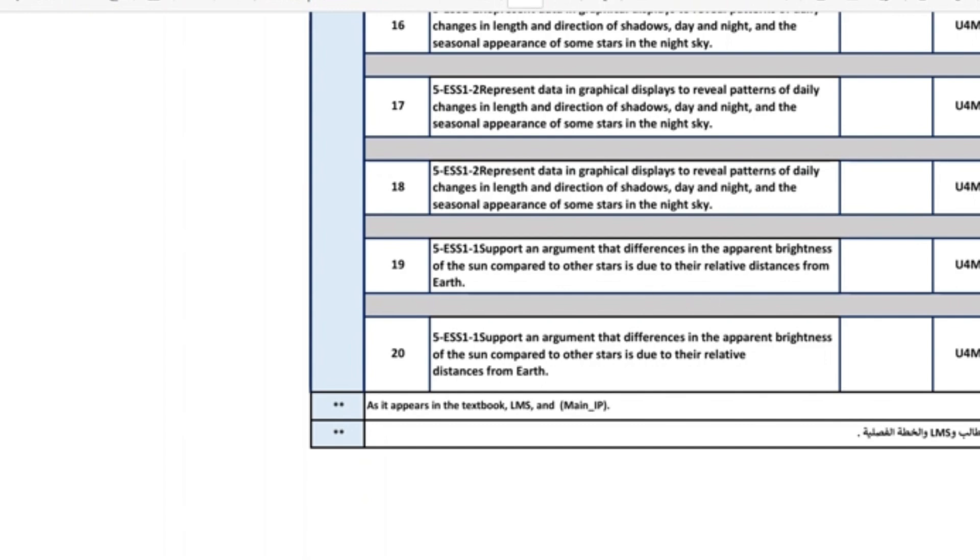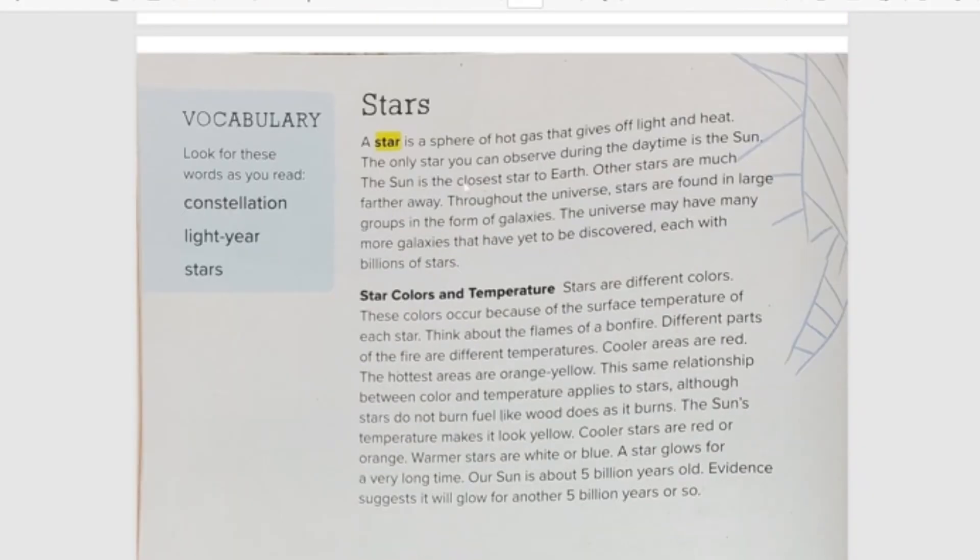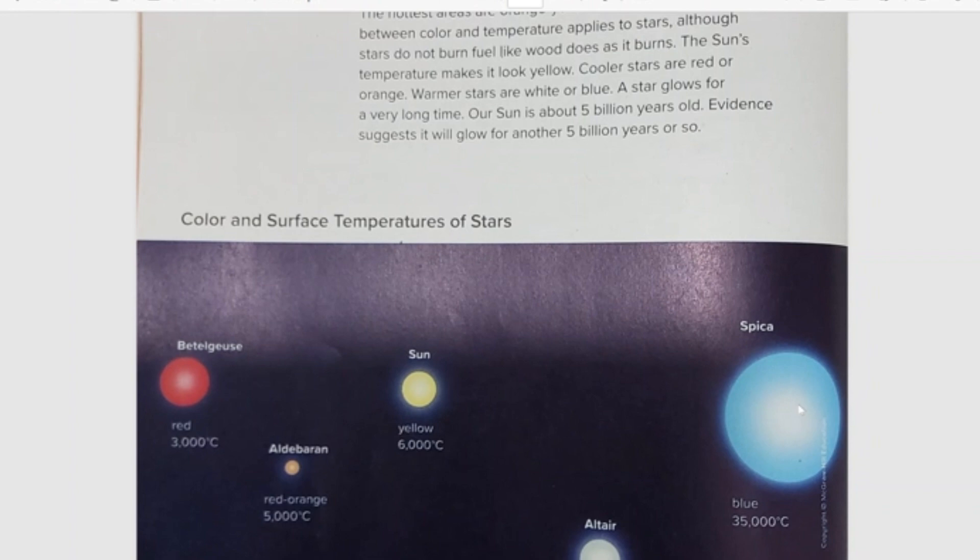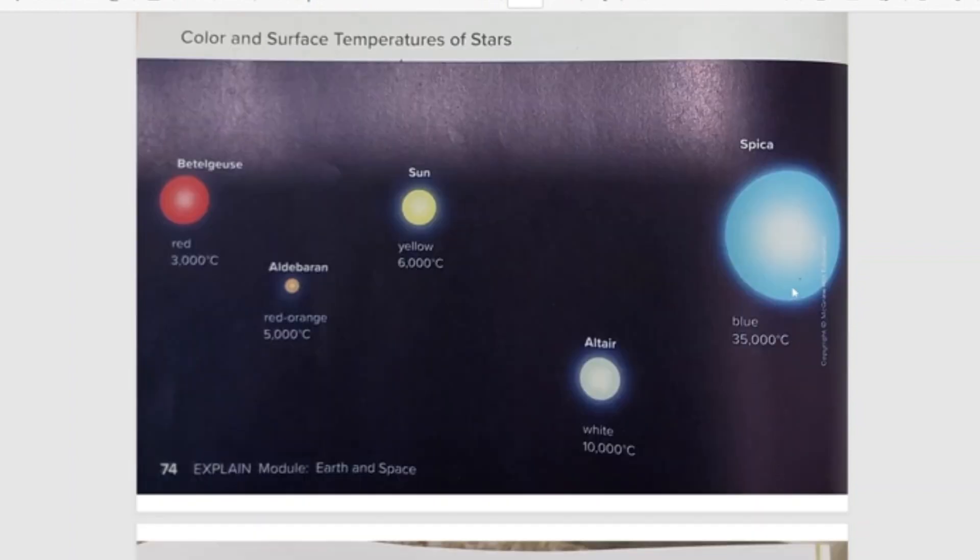Let's go to the next part. It says to you number 19: support an argument of the differences in the apparent brightness of the sun compared to the other stars is due to the relative distance of the earth. So this in Book 2, you can see here about the stars. A star is a ball of hot gas, a sphere, a ball of hot gas. They can be hot, different colors because of their temperature. Some are very hot, blue, very hot. Red, least hot. Look, 3000, red. 35,000, blue. So blue most hot, white, yellow, red, orange. Red is the most cool. Blue, most hot, very hot.